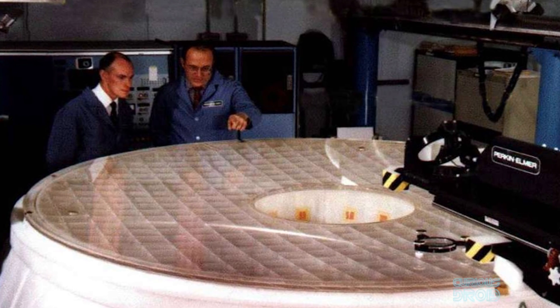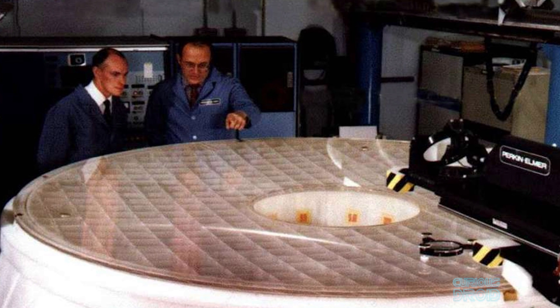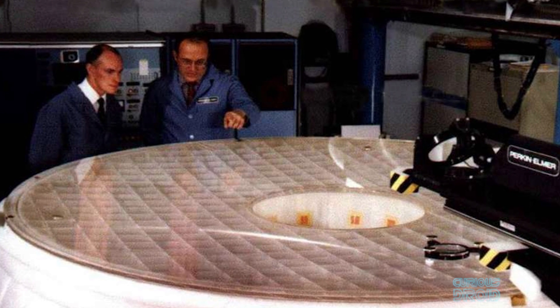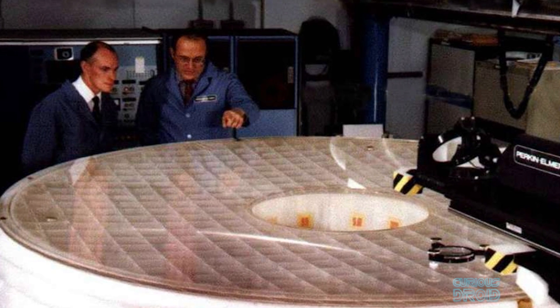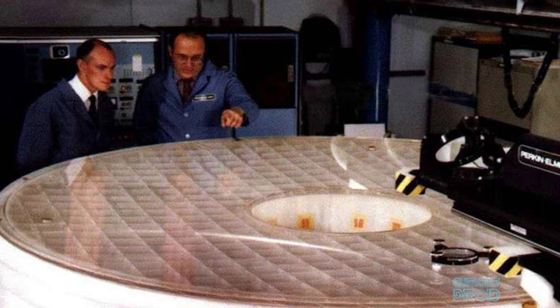The result of this oversight in the assembly of the RNC would lead to the mirror being precisely polished but with an error ten times greater than the specified tolerance.